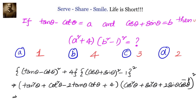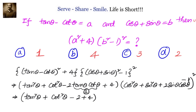In the next step, we will have tan²θ plus cot²θ minus 2, plus 4 — because we know tan θ into cot θ is 1. Similarly, we know cos²θ plus sin²θ is 1, so we will have 1 plus 2·sin θ·cos θ minus 1, whole square.